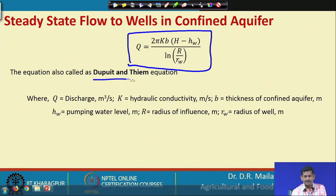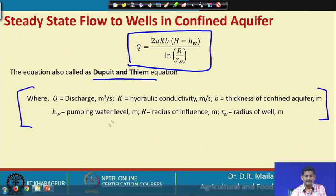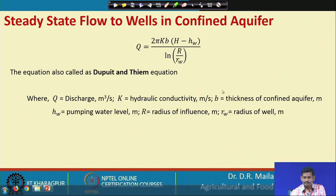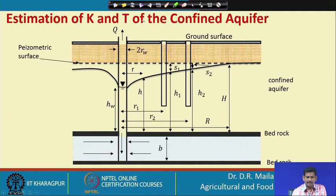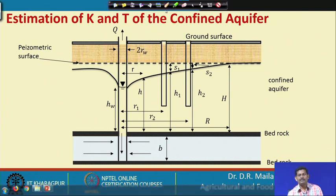Rearranging, q = 2πkb(H − h_w) / ln(R/r_w). This equation is called Dupit's (Thiem) equation. The variables are: q = pumping rate, k = hydraulic conductivity, b = aquifer thickness, R = radius of influence, r_w = radius of well, H = static water level, h_w = pumping water level.